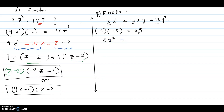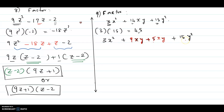So 14xy can be written as 9xy plus 5xy, then plus 15y squared. When you add 9 and 5 you get 14, and when you multiply 9 and 5 you get 45x squared y squared.